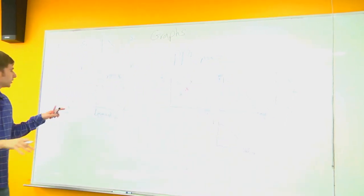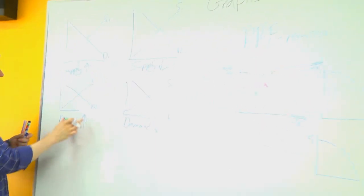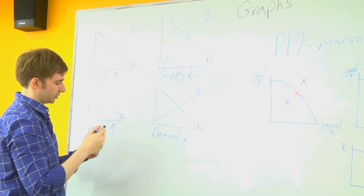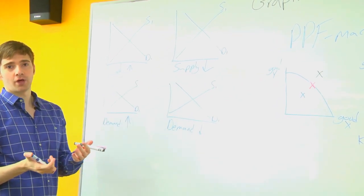So take a look at these four examples. We have supply increasing, demand increasing, and then demand decreasing and supply decreasing. Try and draw these four graphs by yourself.